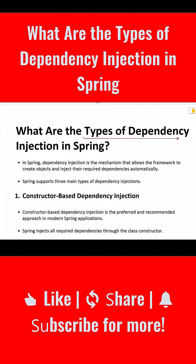What are the different types of dependency injections in Spring? In Spring, dependency injection is the mechanism that allows the framework to create objects and inject their required dependencies automatically. Spring supports three main types of dependency injection.